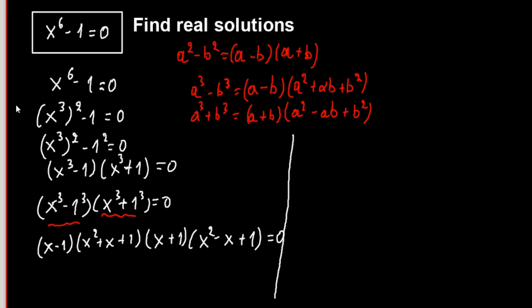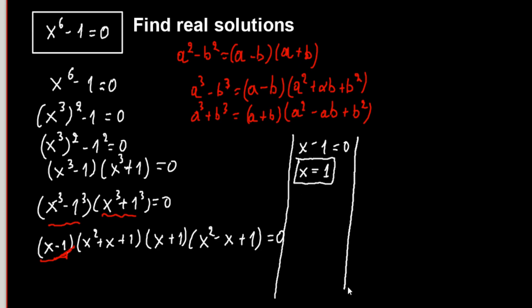From the first factor we have x minus 1 equals 0, so x equals 1. From the other factor we have x plus 1 equals 0, so x equals minus 1.